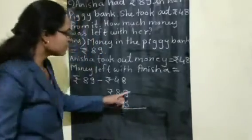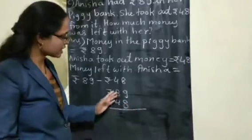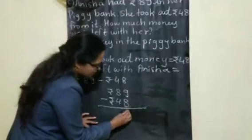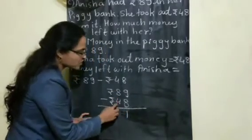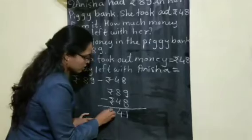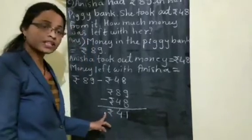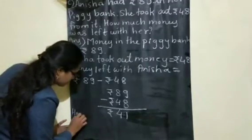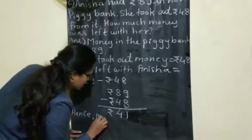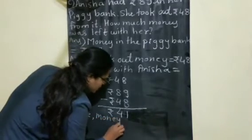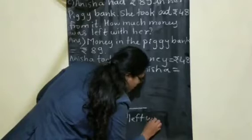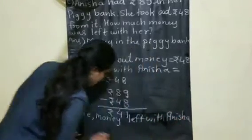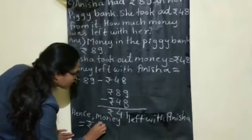Here, not a single place have they given paise, so no need to write paise — directly do the minus. 9 minus 8 is 1. And 8 minus 4 is 4. Write the rupees symbol. So how much money is left in the piggy bank with Anisha? Rupees 41. Hence, money left with Anisha is equal to rupees 41.